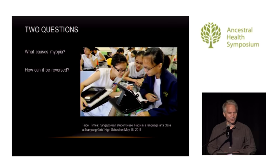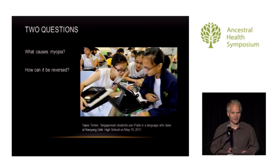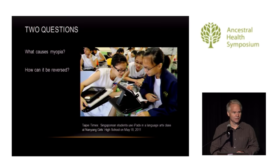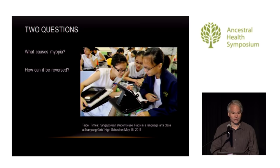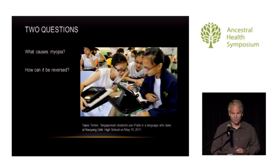The talk really has two parts. The first part is about the causes of myopia — you really have to start there if you're going to be effective in reversing it. The second half will be a technique I've developed, similar to techniques others have developed, on how to use active focusing to reverse myopia. This photograph shows some girls in high school in Singapore in a language arts class using their iPads, and you can see that all the girls are wearing glasses. In some Asian countries like Singapore, myopia is very prevalent.